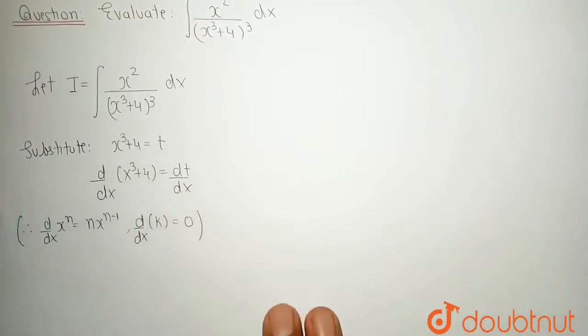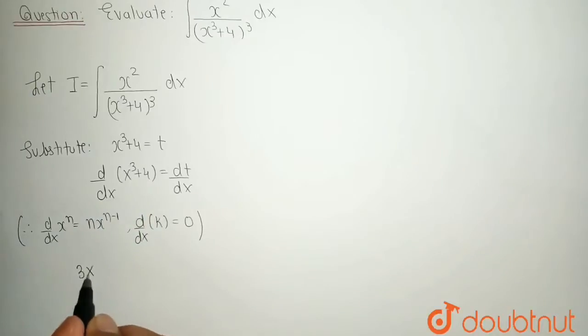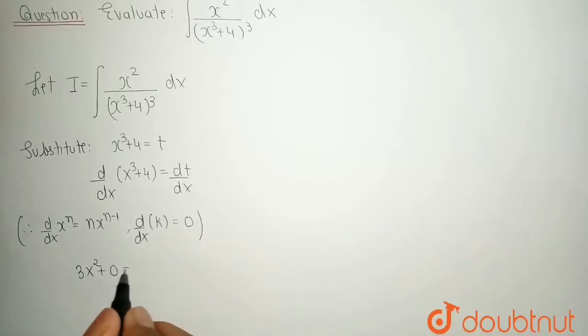So, d by dx of x to the power 3 becomes 3 times x square. And d by dx of 4 is 0 which is equal to dt by dx. Now, shift this dx in the numerator side of LHS and shift this 3 in the denominator of RHS. So, we get x square dx is equal to dt by 3.